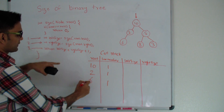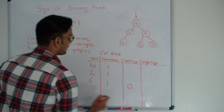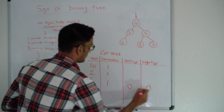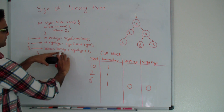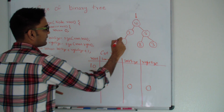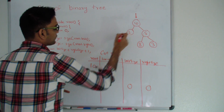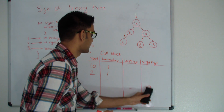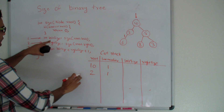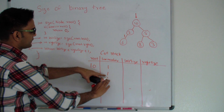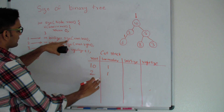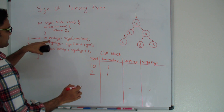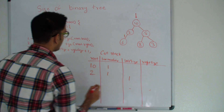Since 6's left is null it returns 0, so the left size for 6 is 0. Similarly, the right size for 6 will also be 0. So 6 returns 0 + 0 + 1, which is 1, to its calling function node 2. Node 2 was last executing statement number 1, and from the left side it received 1, so we update left size to 1.